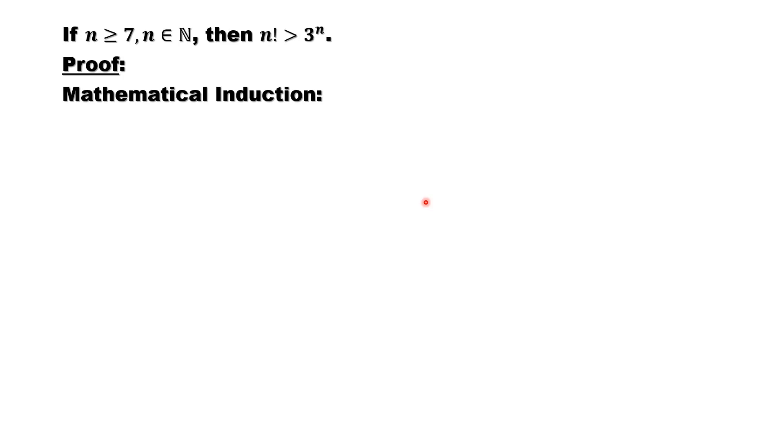The first step, we need to check this result is true from the starting point. What is the starting point? Look at this result. n is bigger than or equal to 7. That means the lowest, smallest n is 7.